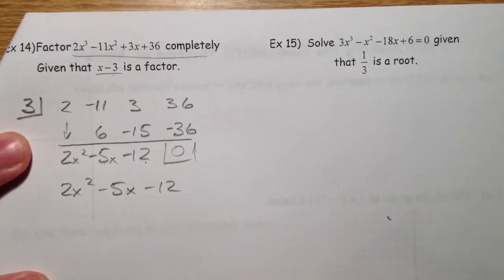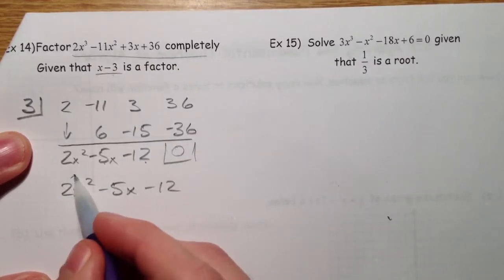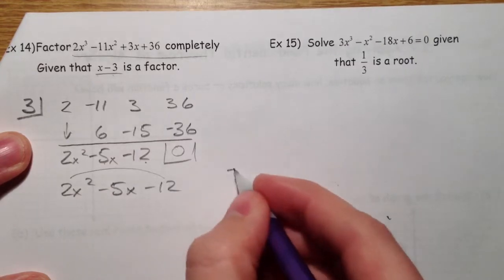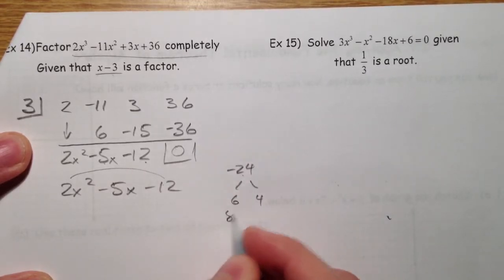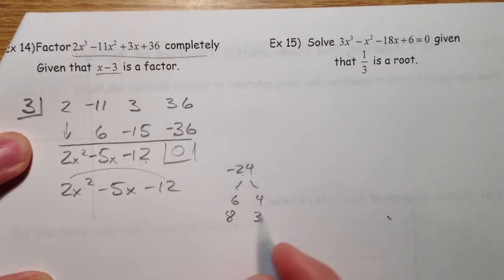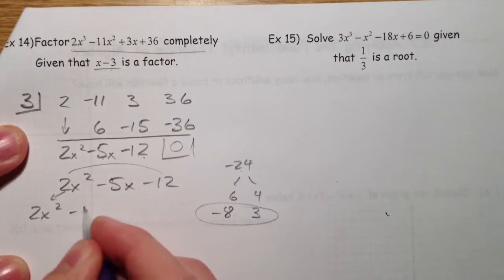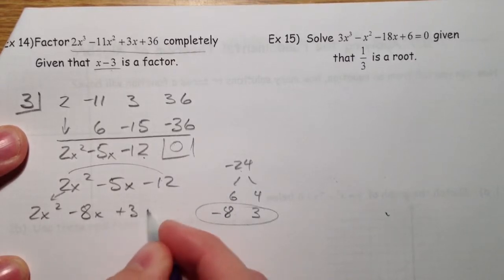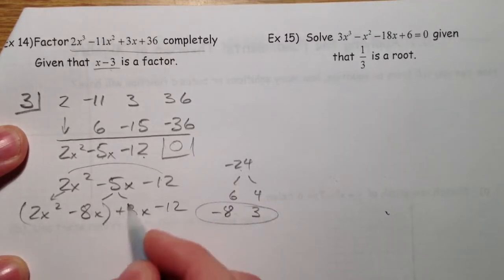So now it says factor completely. Well, so we need to factor this. How we would do that is use the AC method. 24. 2 times negative 12 is negative 24. What multiplies to that? 6 and 4. 8 and 3. That's it. We've got to have a negative 8. So, 2x squared minus 8x plus 3x. We're splitting up this middle term. And then we factor by grouping.